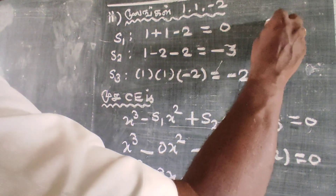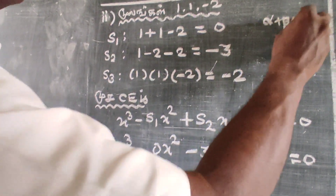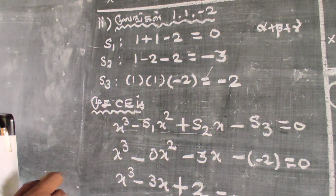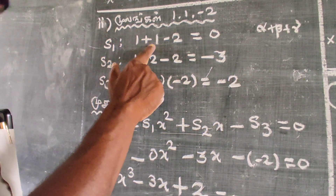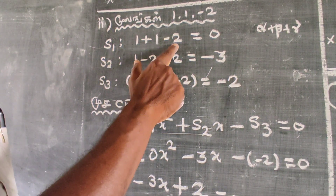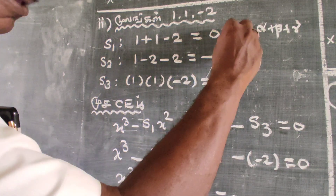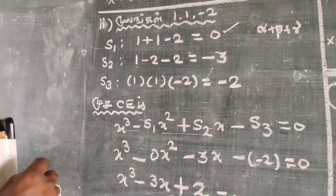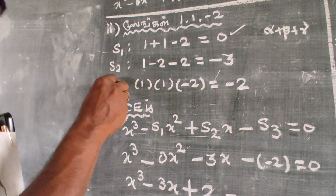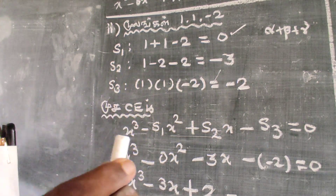S1 is equal to alpha plus beta plus gamma. Adding the three roots: 1 plus 1 plus minus 2 is equal to 0. So S1 is equal to 0.